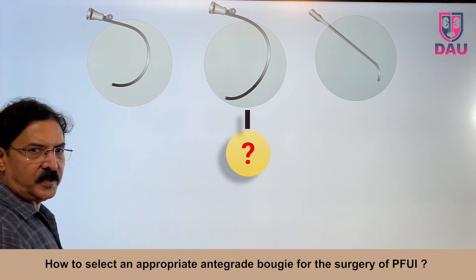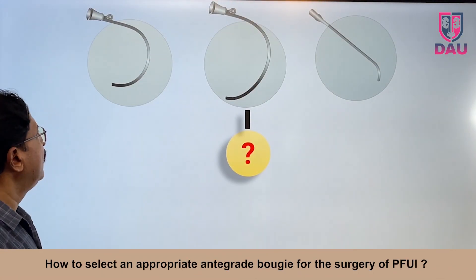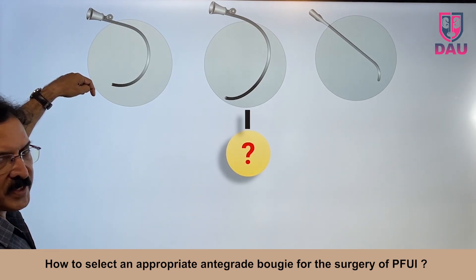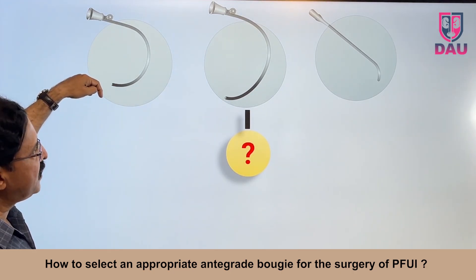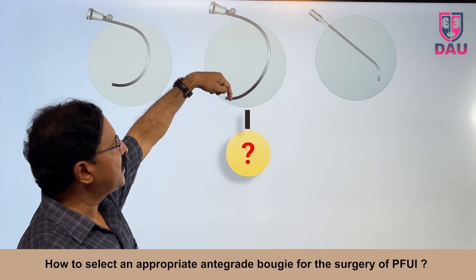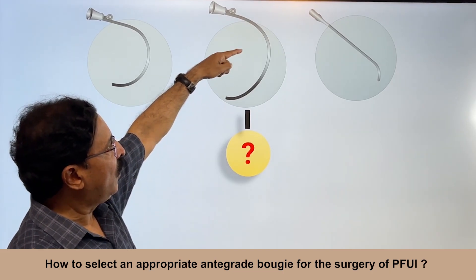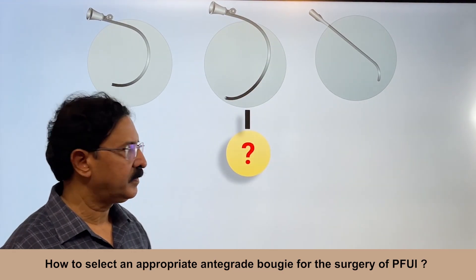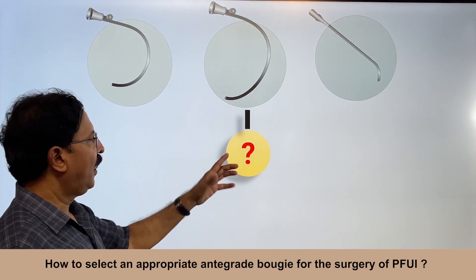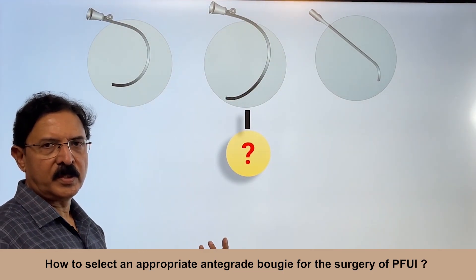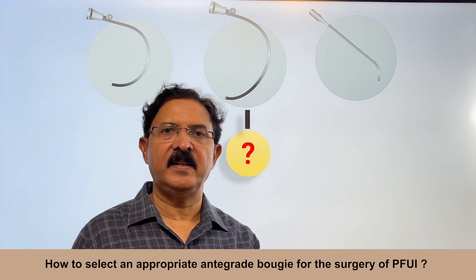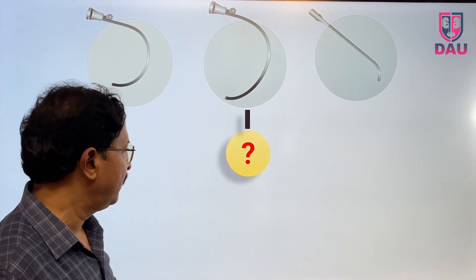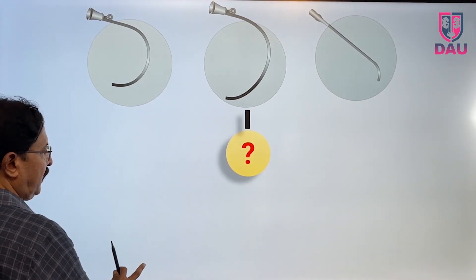There are three options for you. One is a Haygrove bougie with good curvature — a lot of curvature. A Haygrove bougie with less curvature, or sometimes a Lister bougie. How do you decide in which case and in which situation to use which bougie? That's the question here.